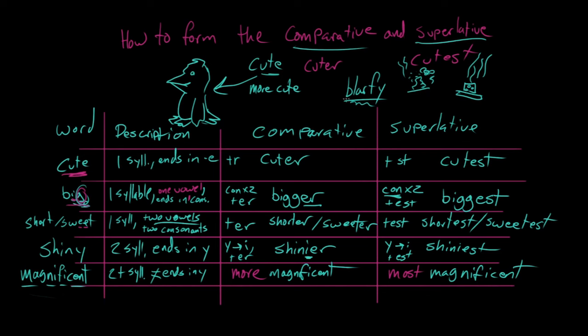Well, what do we know about blarfy? Well, it's got two syllables. Blarfy. So that automatically crosses out any of this stuff. It does end in a Y. Blarfy. So we know that it's probably going to behave like shiny. Like the word shiny. Because it's got two syllables and it ends in Y.